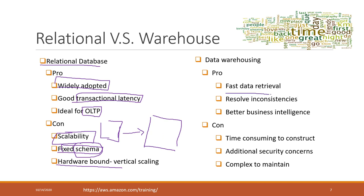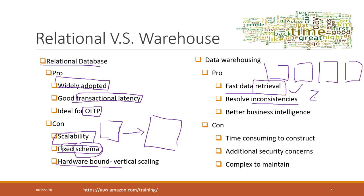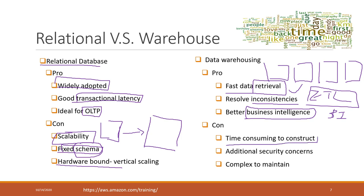For data warehouses, they are fast for data retrieval. If you want to join multiple tables together, a data warehouse will be much faster. They can resolve inconsistency through the ETL process and are better for business intelligence and BI analytic tools. However, they are expensive because they involve a cluster of DB instances, require additional security considerations for communication within the cluster, and can be complicated to maintain due to the technical complexity.